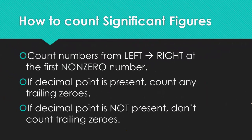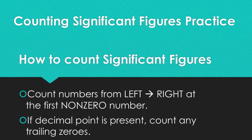So how do you count significant figures? You count the numbers from left to right starting at the first non-zero number. Then, if a decimal point is present, count any trailing zeros—zeros that come after all those numbers. And if a decimal point is not present, you do not count the trailing zeros. Just refer back to the notes you just took.